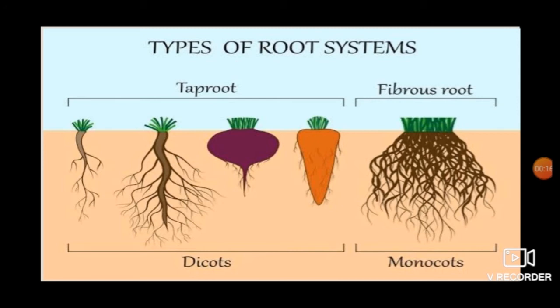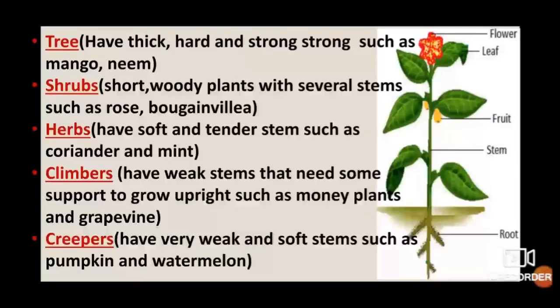wheat, and onion are some common plants with fibrous roots. Stem is the main part of the shoot system and grows above the ground. The other basic parts of a plant, namely leaves, flowers, and fruits, grow on the stem. Stems can be soft or hard, weak or strong. Trees such as mango and neem have thick, hard, and strong stems known as trunks.